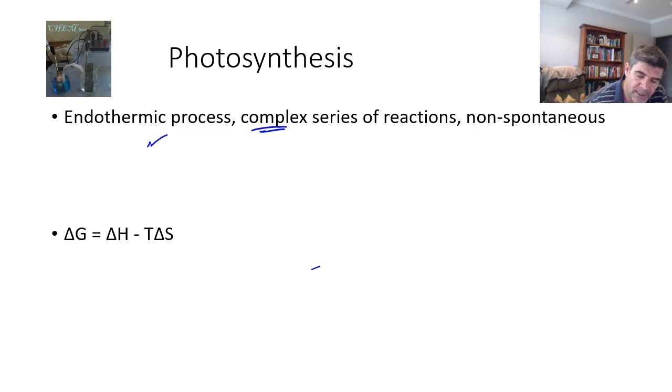Very simply, we can talk about what's the light phase and what's also known as the dark phase or the carbon fixing phase. And these phases occur in different components or different parts of the chloroplasts in plants.